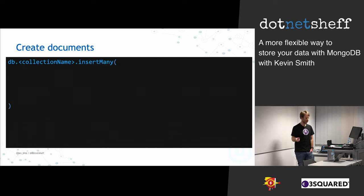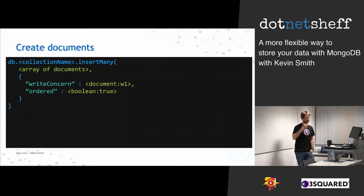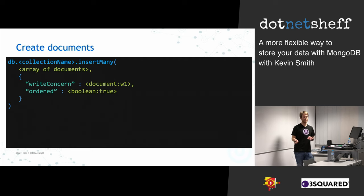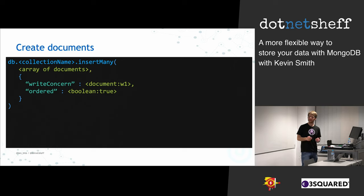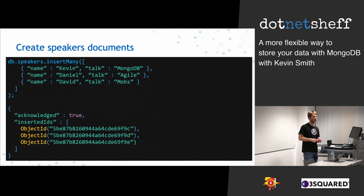For inserting many documents, you call db.collectionName.insertMany and pass an array of documents. This time you get write concern as before and also an ordered property, which defaults to true. When ordered, every document is inserted in order, and if one fails validation, it stops at that point and doesn't do the rest. If you set ordered to false, it tries to insert all in any order and returns which ones succeeded and which didn't. As an example, calling insertMany with an array of speaker objects will come back saying it's acknowledged and return the IDs for all the documents.